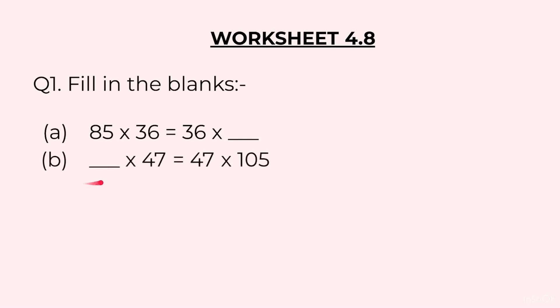A part, 85 into 36 is equal to 36 into dash. B part, dash into 47 is equal to 47 into 105. C part, 33 into 52 into 84 is equal to 84 into 52 into dash.